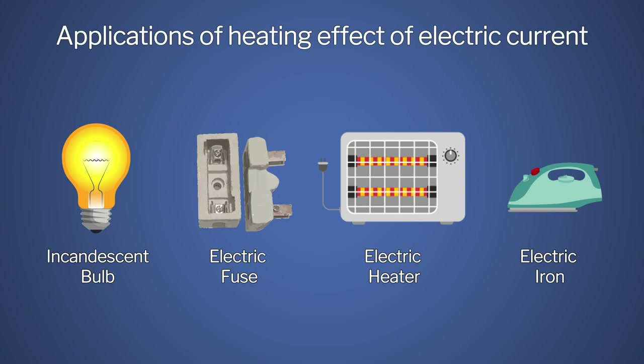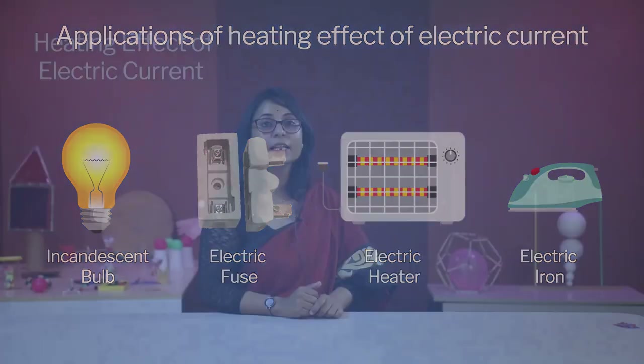Now let's switch to the magnetic effect of electric current. The term magnetic effect of electric current means that an electric current flowing in a wire produces a magnetic field around it. Let's perform an experiment to understand it better.